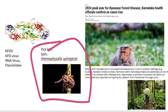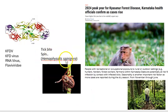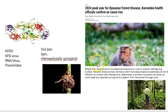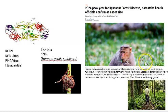The tick responsible is Haemaphysalis spinigera — remember it as the 'spin tick.' It is a hard tick. This tick is primarily affecting monkeys because monkeys live in the forest. The monkey is important because it is the main link in transmission to humans — specifically Indian primate species.